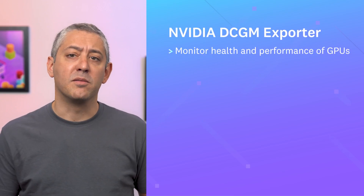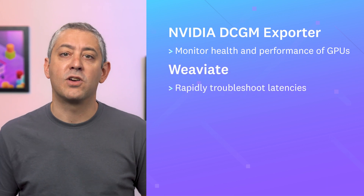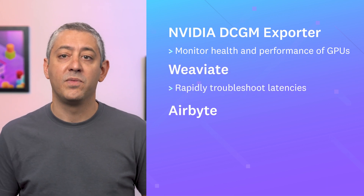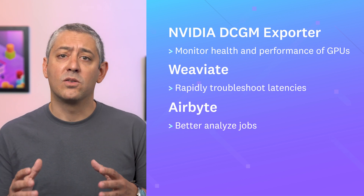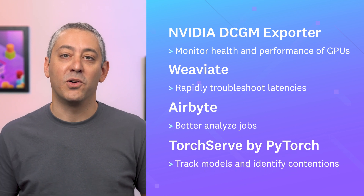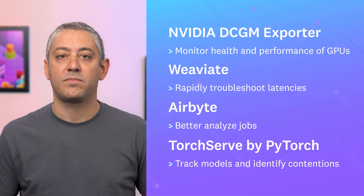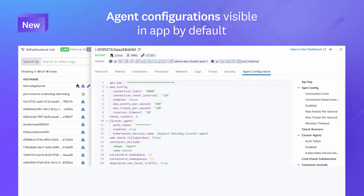But that's not all. You can now monitor the health and performance of widely used NVIDIA GPUs, rapidly troubleshoot latencies in Weaviate database instances, analyze Airbyte data integration jobs by completion status, sources of failure, and more, and track which PyTorch models are deployed, as well as identify resource contentions. That was just a sneak peek of the many features we released this month. For a full list, visit the link shown.